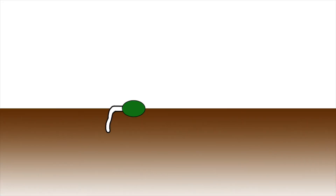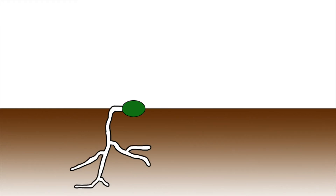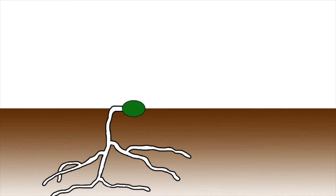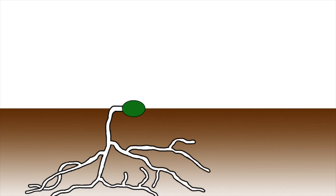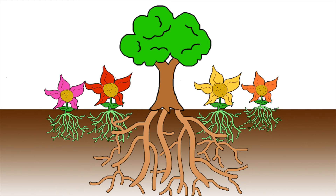The classical Streptomyces life cycle starts with a spore that germinates and grows through hyphal-tip extension and branching, forming a network of cells that penetrate into their growth substrate. This vegetative growth essentially anchors the Streptomyces colony in place, much like a plant root system.